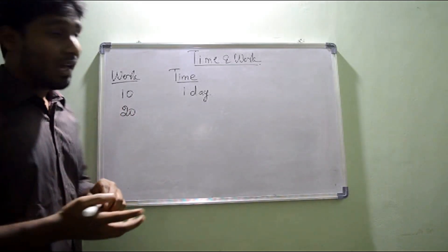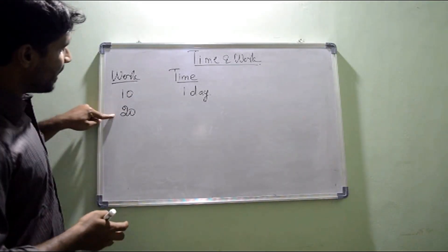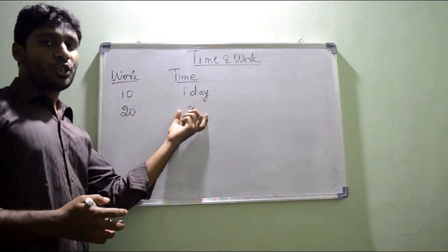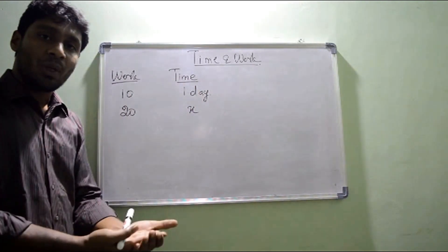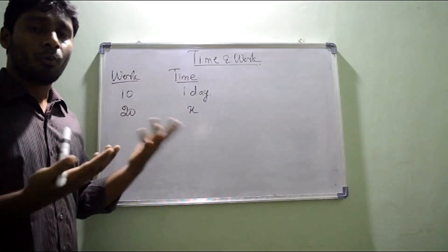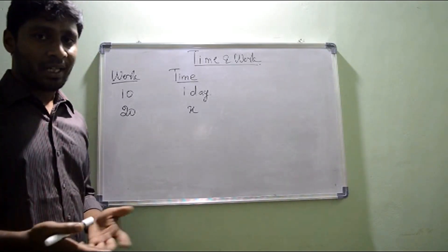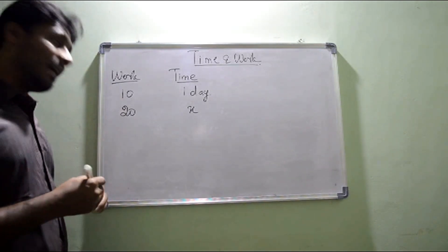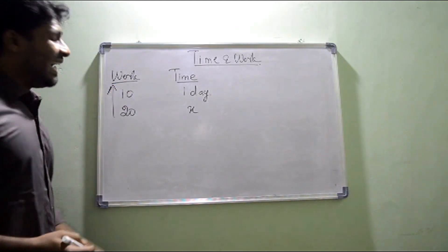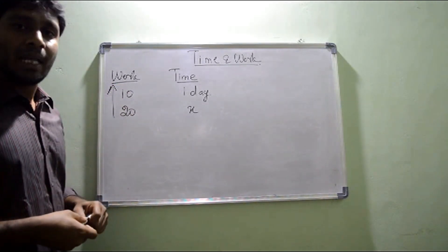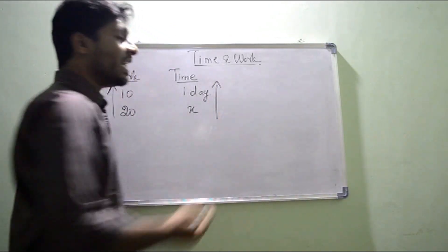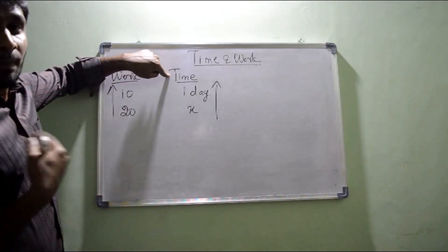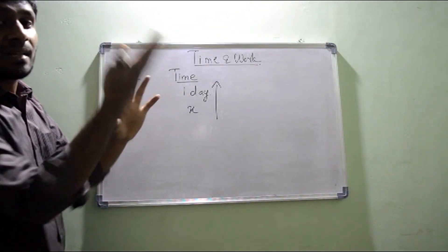If my work increases to, say, 20, what happens to time? In one day I can do 10 works, so if I have 20 works, I will take more than one day. What's happening here is that my work is increasing, and when work increases, time also increases.